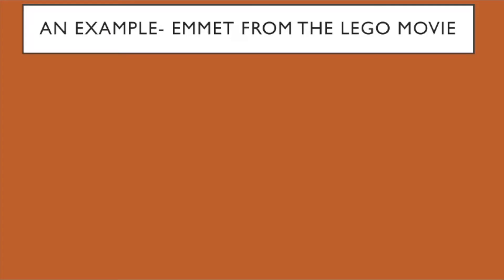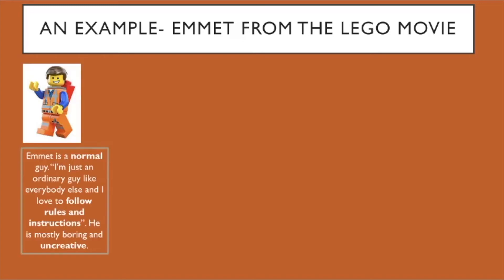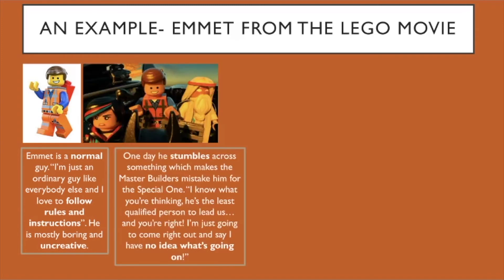I'm going to go into depth with an example of a character from the Lego Movie — his name is Emmet. Think back to what you heard in the video, because as I was watching it, Emmet came to my head straight away. Emmet is a normal guy; a direct quote from him: 'I'm just an ordinary guy like everybody else and I love to follow rules and instructions.' He is mostly boring and uncreative. That video literally said that anti-heroes like to follow the rules — they might be one of thousands of people following the rules of an evil institution. That's Emmet.